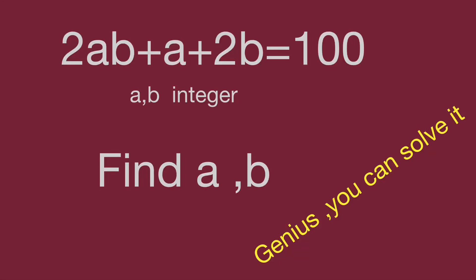Hello. This question is good practice for Math Olympiad. The equation is 2ab plus a plus 2b equal to 100, where a and b are integers. Find the value of a and b. Can you find it? Pause the video and give yourself a try when you are ready.